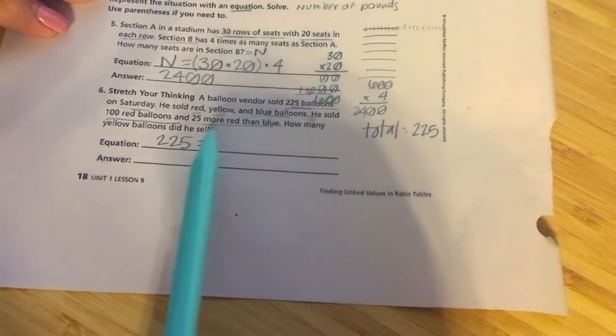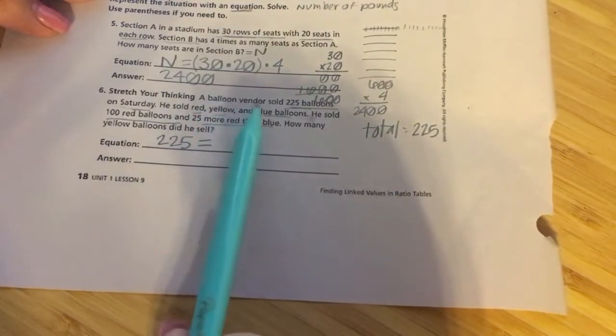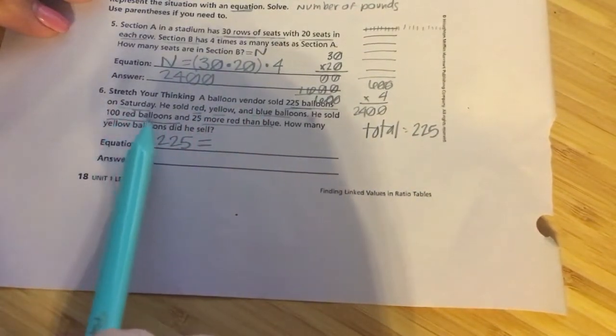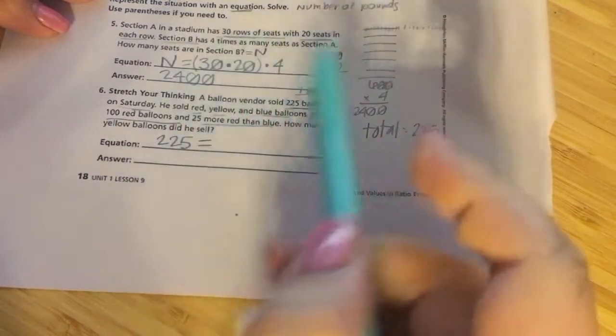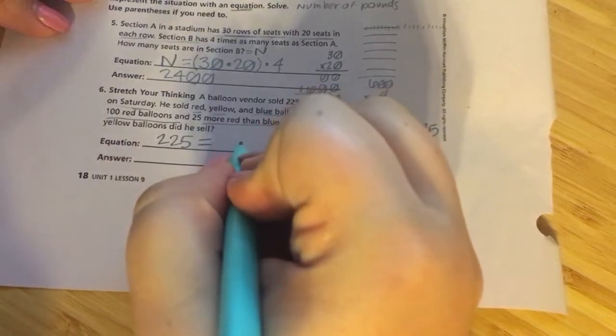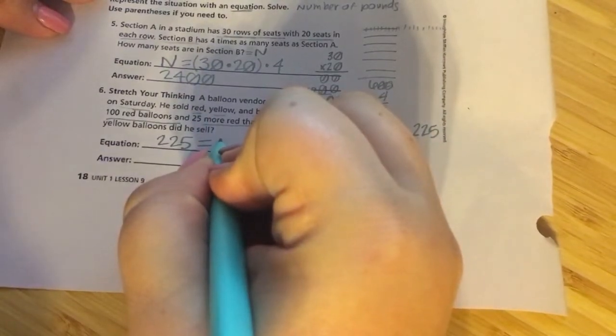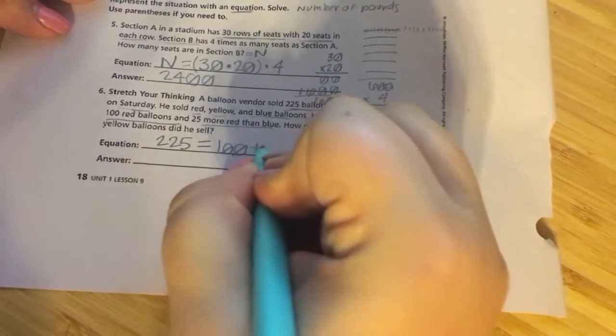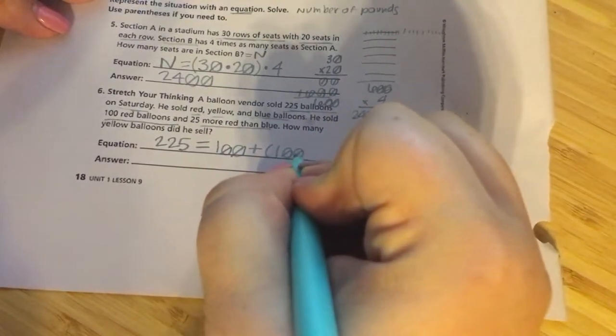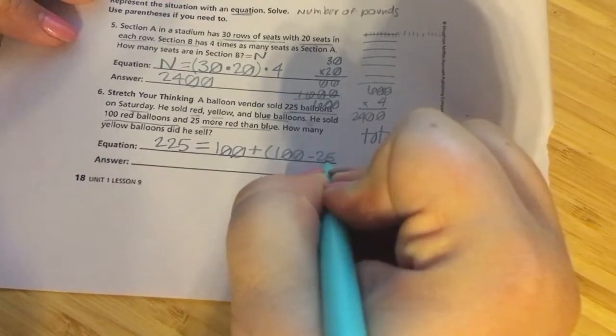But I do know I'm going to start with 225. Why? That's my total balloons. I already have my sum. Or as we will find out, I do use more than one operation. So I have my 100 and I'm going to have my 100 and I will add that to the difference of 100 and minus 25.